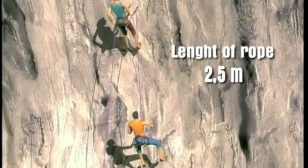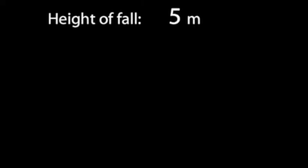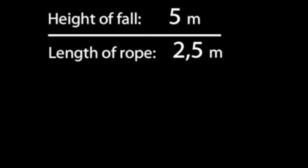But this time the rope in the system is only 2.5 meters long. The fall factor becomes 5 meters divided by 2.5 meters — 2. This is a critical factor for the climber.